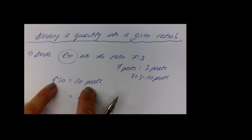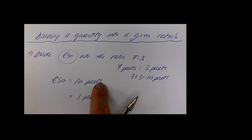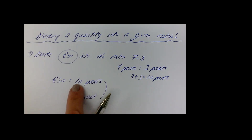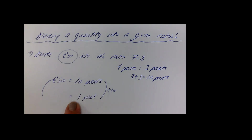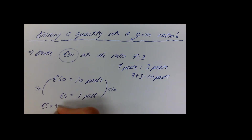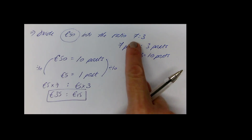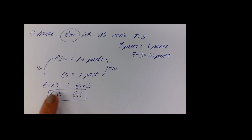Since 50 euros equals 10 parts, divide both sides by 10 to get one part equals 5 euros. Then 7 parts is 5 × 7 = 35 euros, and 3 parts is 5 × 3 = 15 euros. The final answer is 35 euros to 15 euros. You can always double-check that 35 and 15 add up to 50.